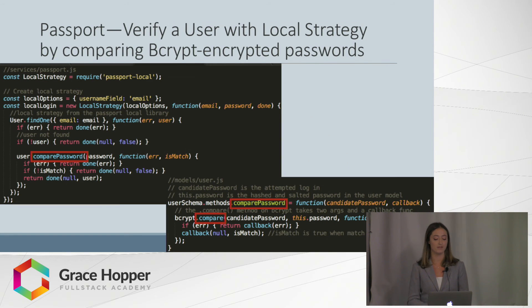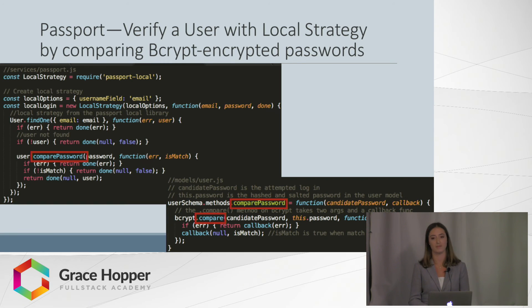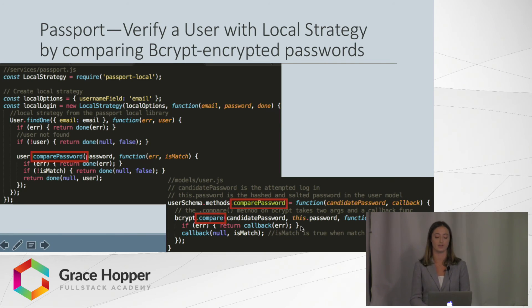When the user is found, the compare password method from the user model definition is called. That method, defined on the user schema, relies on the compare method from the bcrypt library to examine the two passwords. It takes the candidate password and the this password — the one currently being tested and the one that has been hashed and saved in the database.